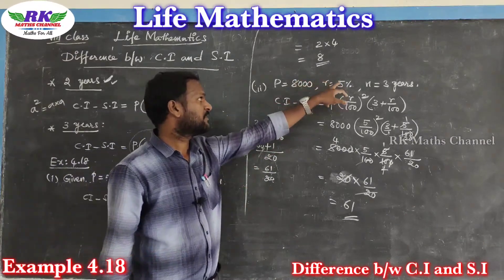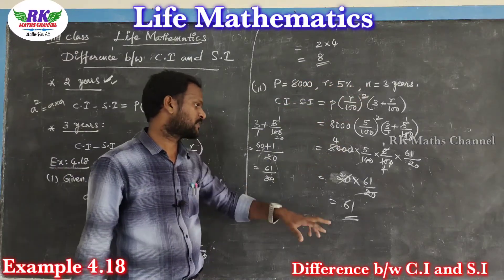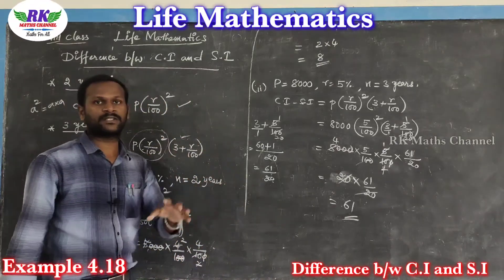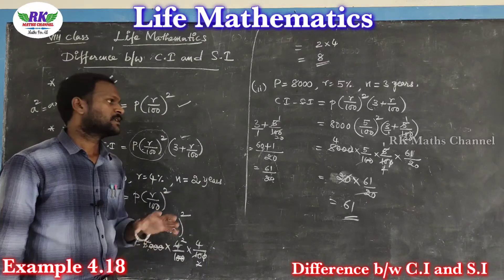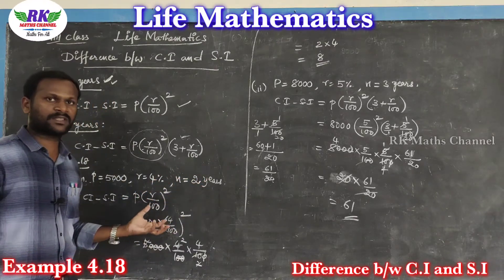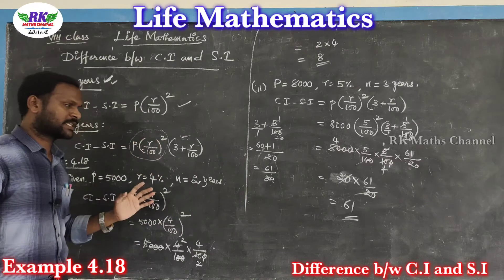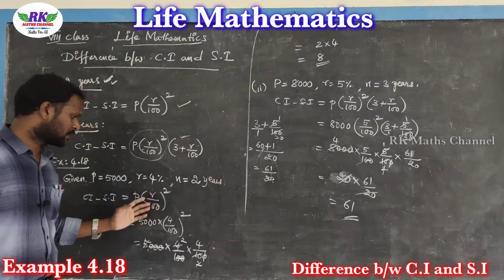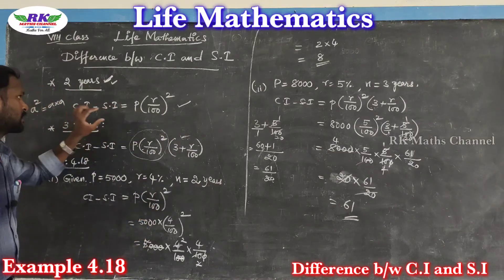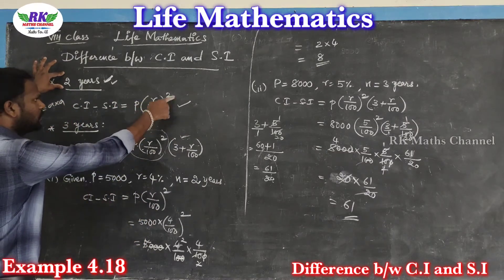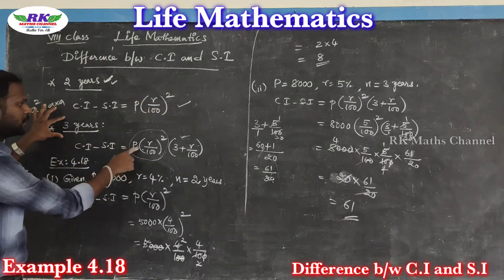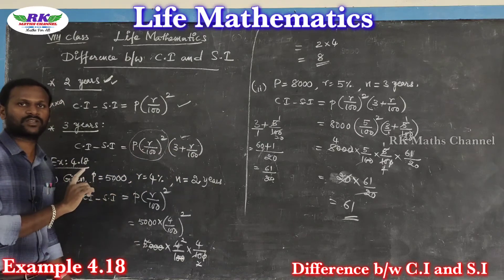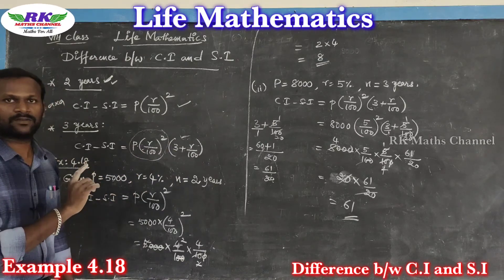For the 8,000 amount at 5% per annum for 3 years, the difference between compound interest and simple interest is 61. That is the difference between compound interest and simple interest. It's very simple — if you know simple interest is good and compound interest is good, then you can say it. For two years: P into R by 100 whole square; for three years: P into R by 100 whole square, then add 3 plus R by 100. That's important.